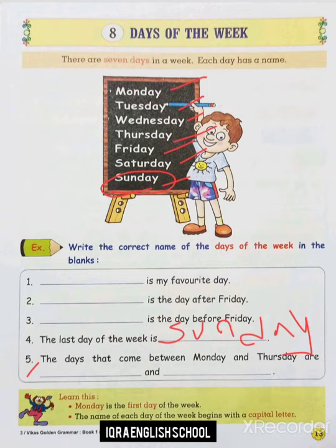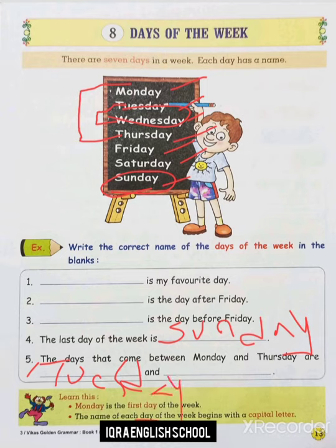Moving to the fifth one: the days that come between Monday and Thursday are blank and blank. So jo bhi din hai na Monday aur Thursday ke beech mein aata hai — kya aata hai? Look here: Monday aur Thursday ke middle mein kaun se words hain? There are two. So it will be Tuesday and Wednesday.